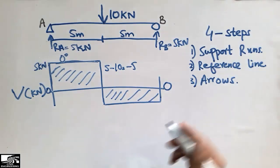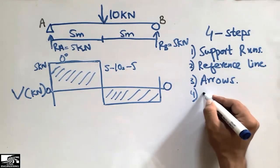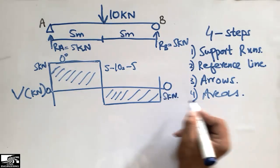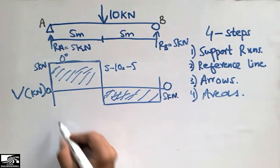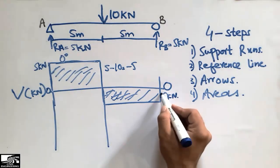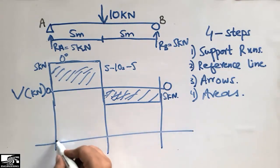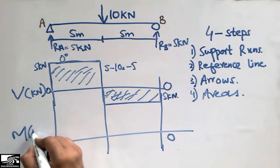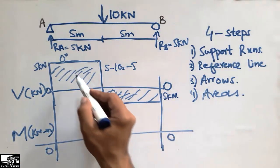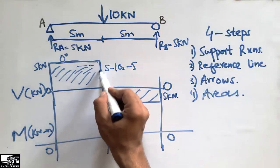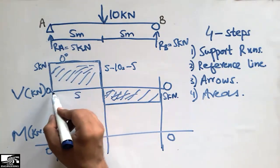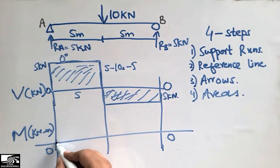The last step is to calculate the areas to find the bending moment diagram. Also here we have 5 kilonewton. To find the area of each rectangle we get the bending moment diagram. The reference line has been extended for the moment diagram, with units of kilonewton·meter. The area of the left rectangle: 5 kilonewton height times 5 meter width equals 25 kilonewton·meter.